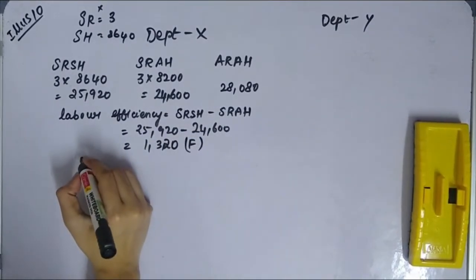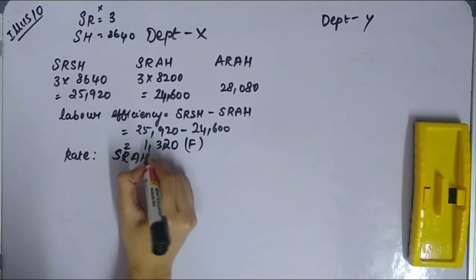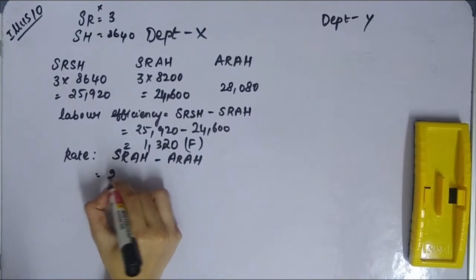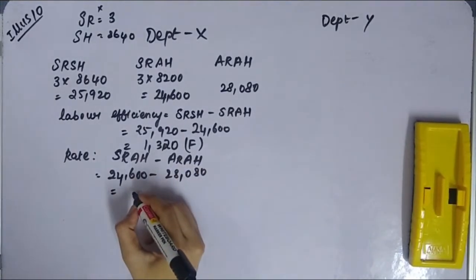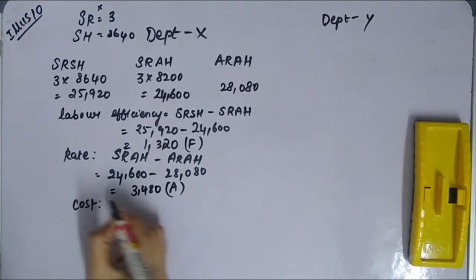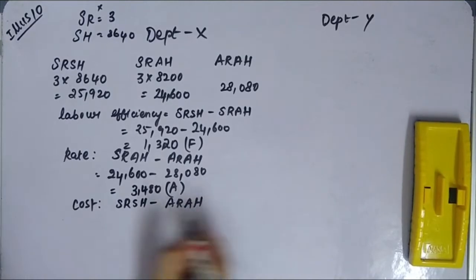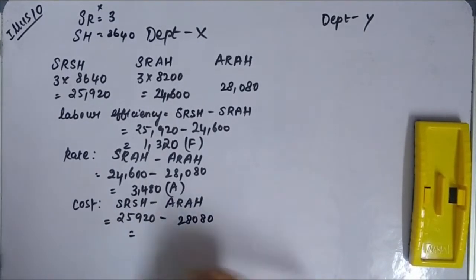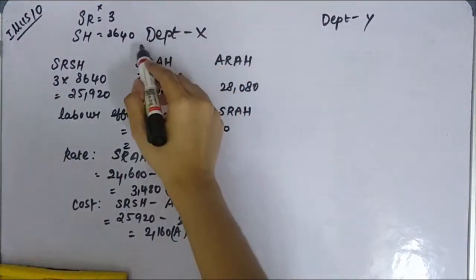Labor rate variance formula is SRAH minus ARAH. That is 24,600 minus 28,080 = 3,480, which is Adverse.